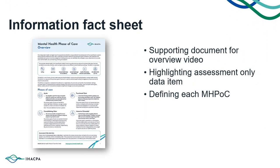Resource two is a concise two-page information sheet providing an overview of the classification and the mental health phase of care to support resource one. This resource is intended to be quick and easy to access, with the inclusion of the phase of care definitions and the highlight of assessment only as a data item.